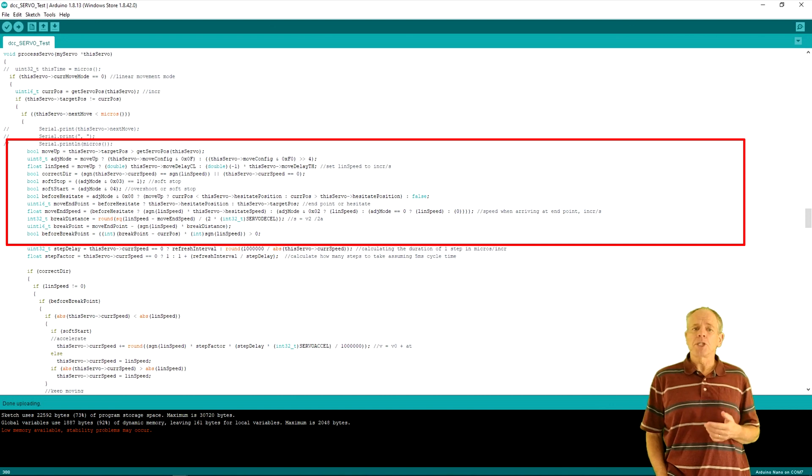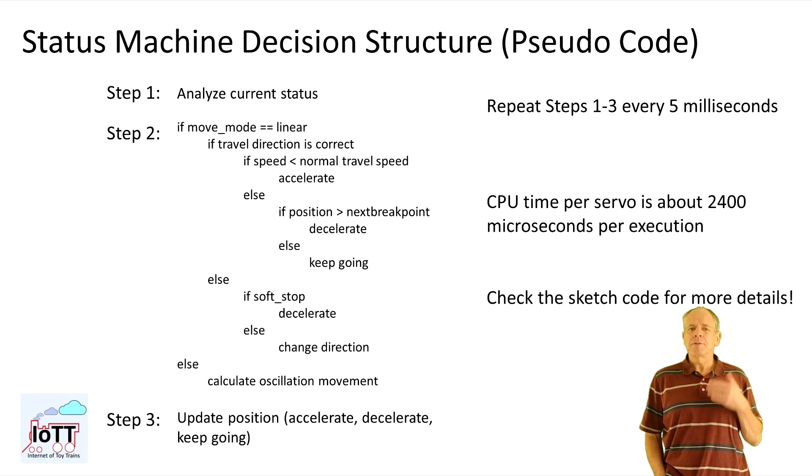Is the current position before or after the hesitation point if applicable? What is the required speed at the end of the movement? And if that is below the normal linear speed, where is the point to start slowing down?